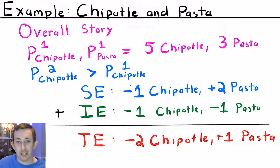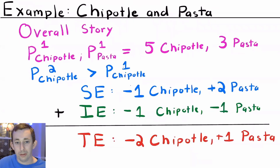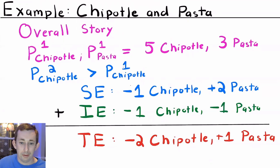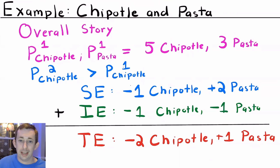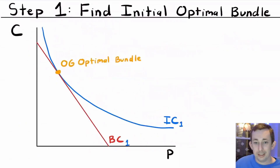The overall story here is that we're going to have some initial prices for Chipotle and pasta, and we have some original optimal bundle. The price of Chipotle is going to go up, and then we're going to see what happens with the substitution and the income effect. I'm going to talk about why the substitution effect is always negative for Chipotle and positive for pasta, and why the income effect should make both goods go down.